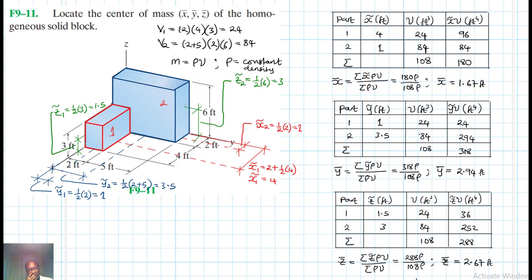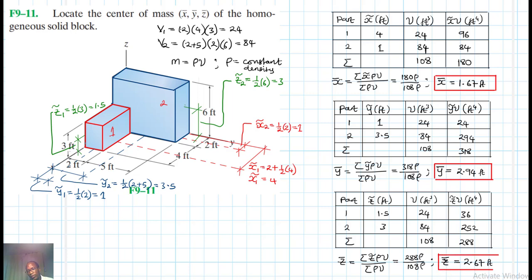Let's check our solutions: X-bar equals 1.67 feet — OK; Y-bar equals 2.94 feet — OK; Z-bar equals 2.67 feet — right, I think it makes sense. So our final answers are X-bar equals 1.67 ft, Y-bar equals 2.94 ft, Z-bar equals 2.67 ft. I hope this video was helpful — give me a thumbs up, keep subscribing and liking my channel. Bye bye and see you in my next screencast.